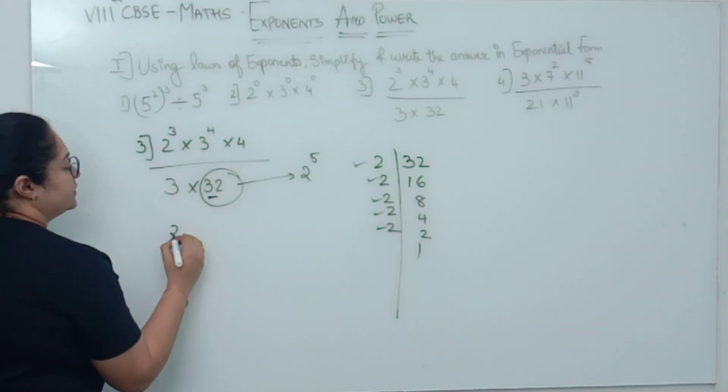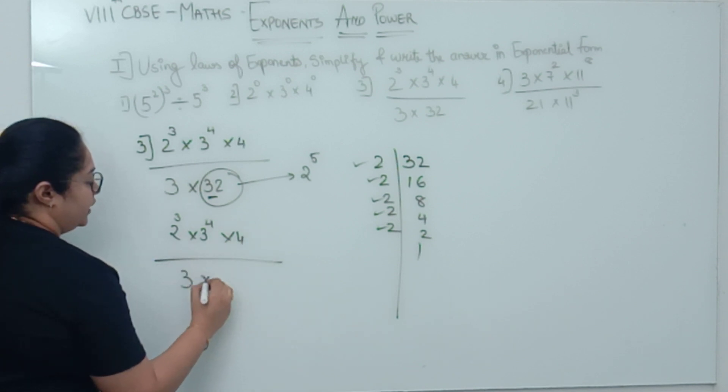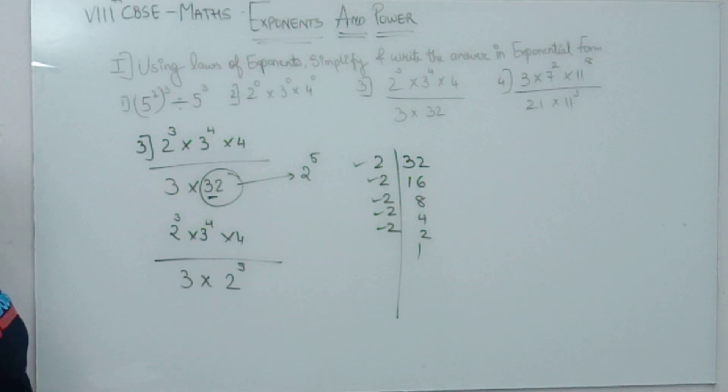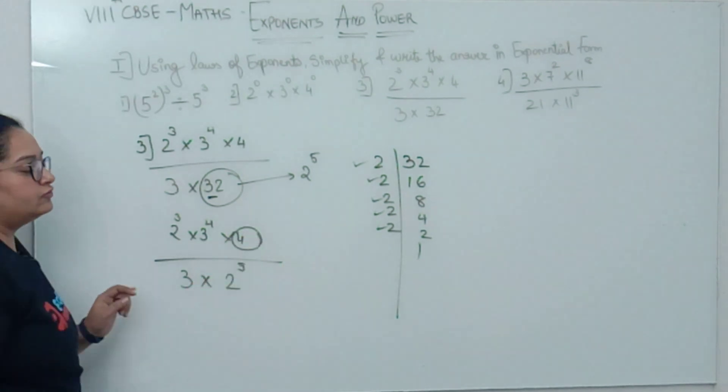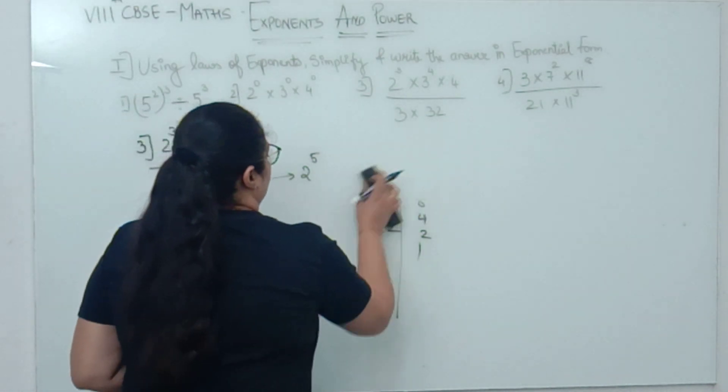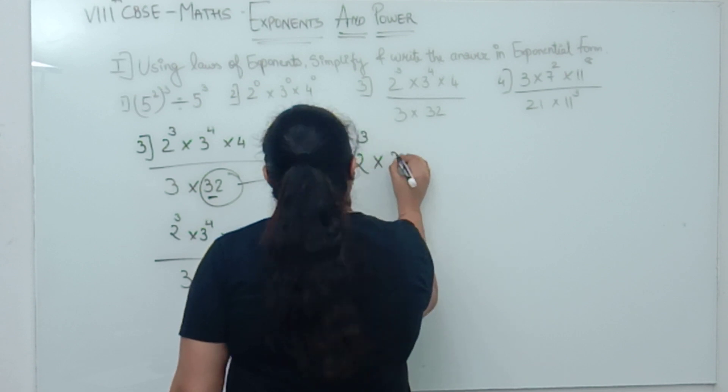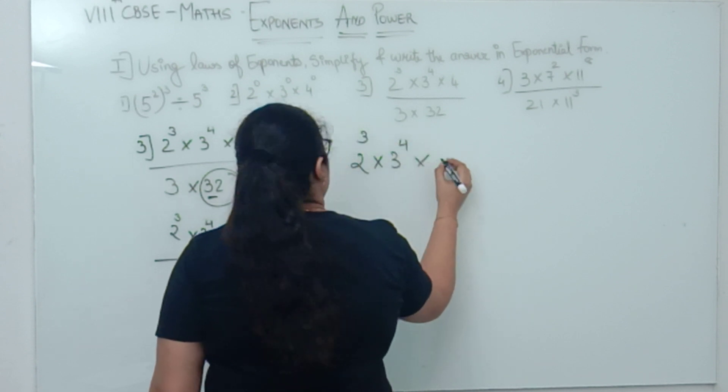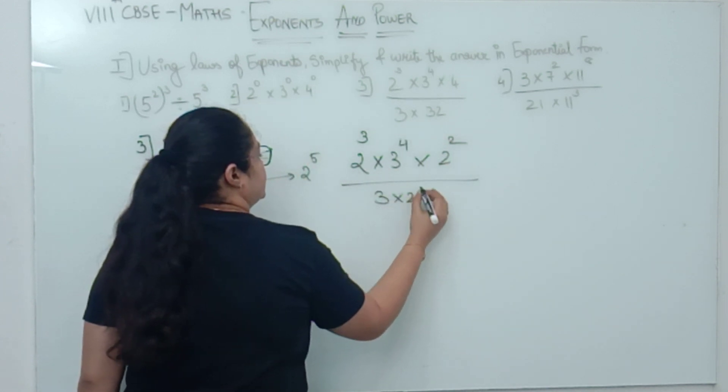So now, 2³ × 3⁴ × 4 upon 3 × 2⁵. Now something looks similar, right? The next step is, 4 you also can write in exponential form. How? 2 raised to 2. So what will be the next step?